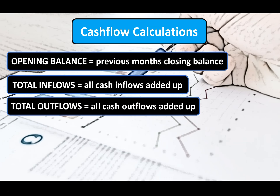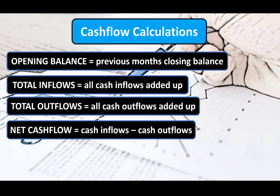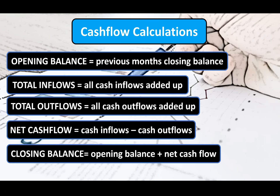Total outflows refers to all of the money that has gone out of the business that month — including employee wages, utility bills, and any purchases — and is calculated by adding up all cash outflows together. The net cash flow is the difference between all money coming in during the period against everything paid out, and it determines whether the bank balance will increase or decrease. It is calculated by deducting total cash outflows from total cash inflows. The closing balance is the actual cash the business is left with at the end of the period, calculated by adding the net cash flow to the opening balance. However, if the net cash flow is negative, you would deduct this figure from the opening balance.